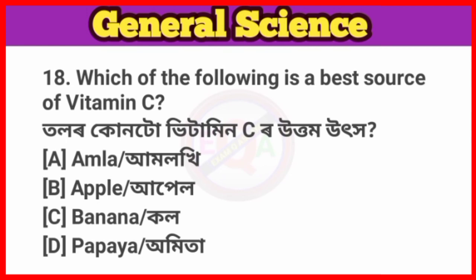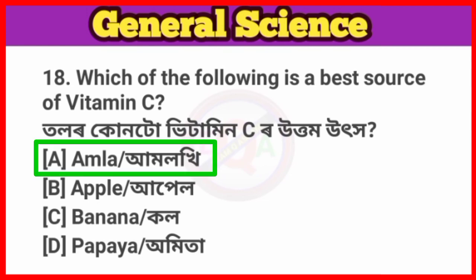Question No. 18. Which of the following is the best source of vitamin C? Answer: Option D, Amla. Amla is the best source of vitamin C.